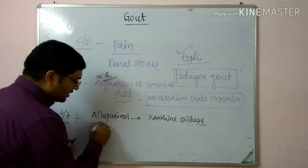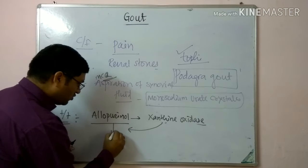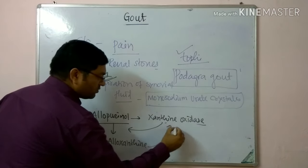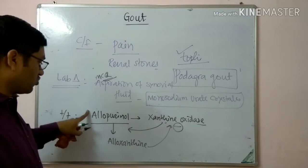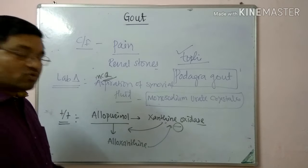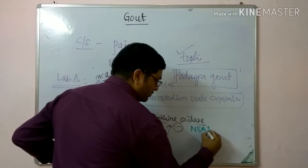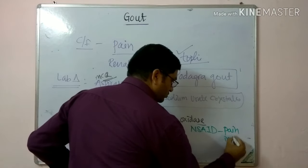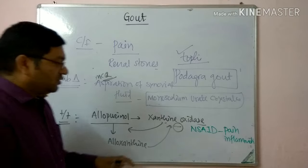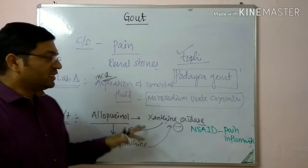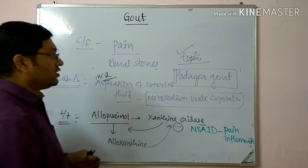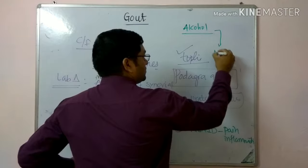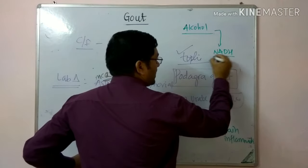In treatment, the drug of choice is allopurinol, which has two actions. First, it is a competitive inhibitor of xanthine oxidase. Second, it undergoes suicide inhibition — xanthine oxidase itself converts allopurinol into alloxanthine, and alloxanthine is a more powerful inhibitor of xanthine oxidase, which is why it is also called suicide inhibition. Other drugs used in treatment include NSAIDs (non-steroidal anti-inflammatory drugs) to relieve pain and inflammation.